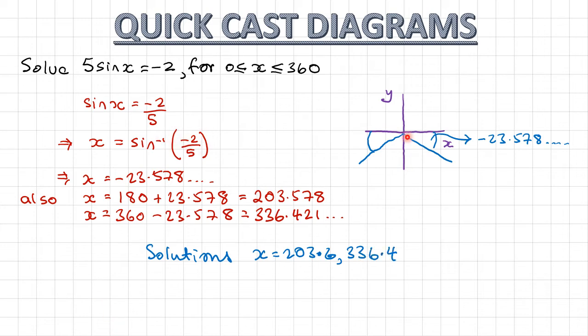So my solutions are x equals 203.6 and also 336.4. I found my first solution, plotted that on the diagram, reflected it in the y axis to get the other solution, and turned the negative angle into a positive one because it needs to be between 0 and 360 degrees.